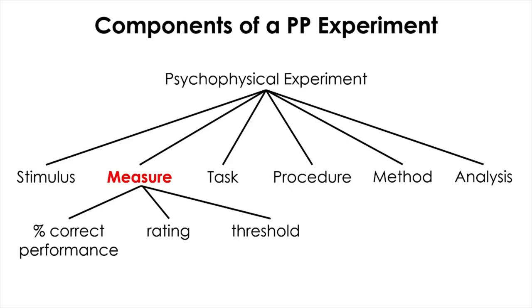There are a number of different measurements in psychophysics, such as percent correct performance of a certain visual task, or rating, and so on. But in many visual psychophysical tests, a threshold of a certain aspect of vision, such as contrast or size, is probably the most frequently measured quantity.